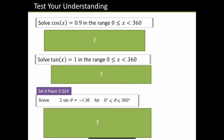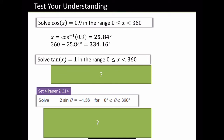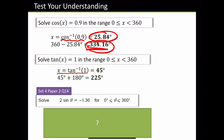Solve cos of x equals 0.9, range 0 to 360 — pause the video and try these. For the first one, you'd do cos⁻¹ in your calculator. It says cos of x, so 360 take away 25.84 — these are the two solutions. Solve tan of x equals 1, range 0 to 360. They've done tan⁻¹ of 1, they've got 45. It repeats every 180, so they've done 45 plus 180 equals 225. If you added 180 again you'd go over 360, so you don't actually need it.